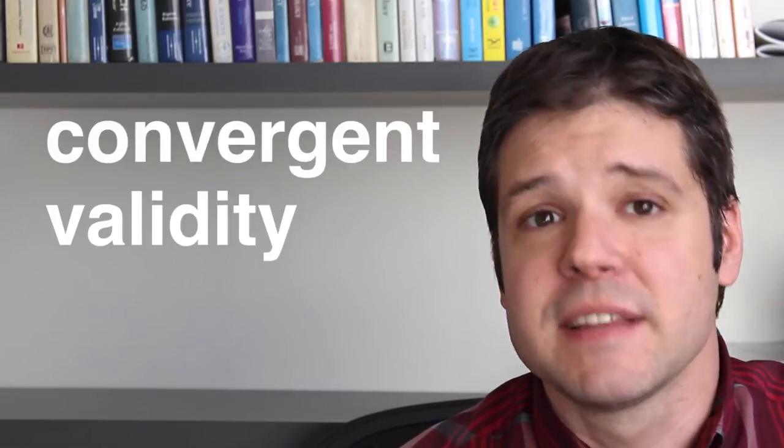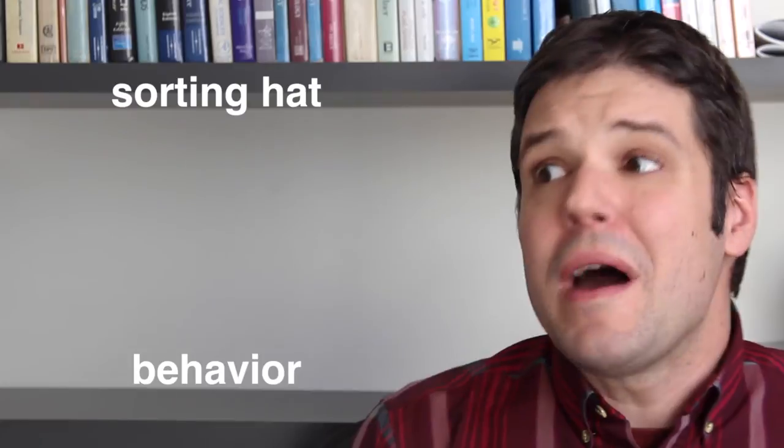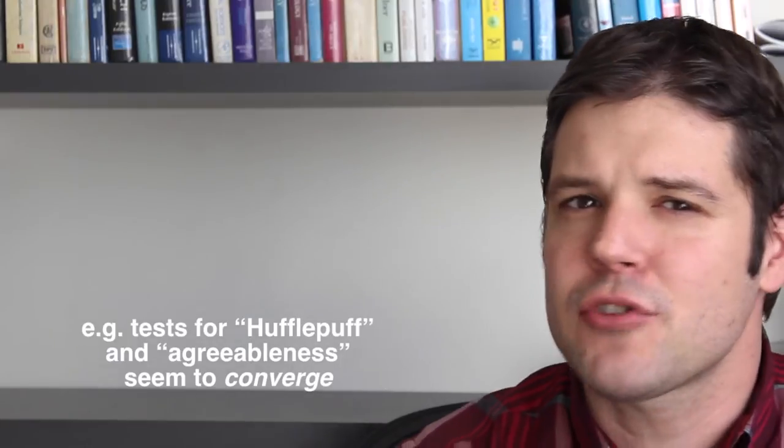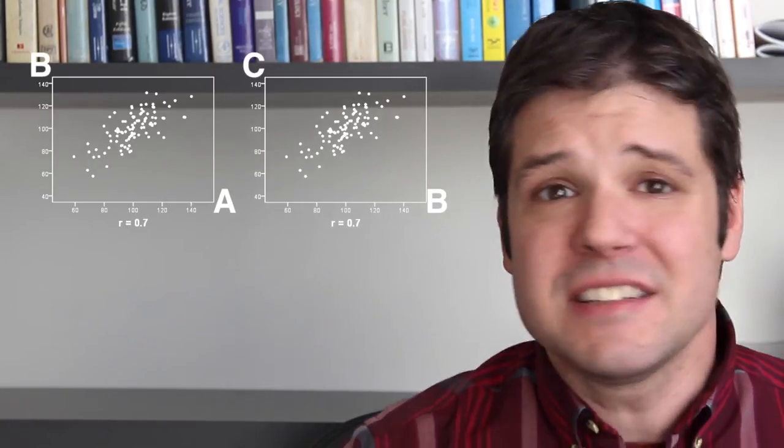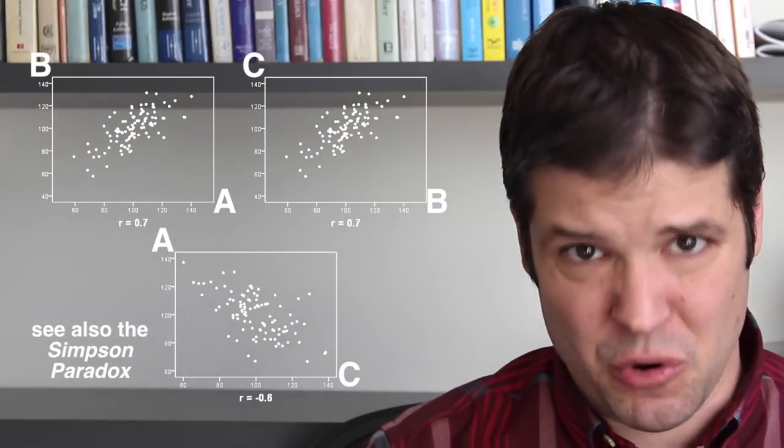Now, there are some limitations to these conclusions. First of all, this only demonstrates what's called the convergent validity of the sorting hat. This means they didn't check whether the sorting hat can predict behavior, they only checked whether it predicts other measures that have been shown to predict behavior. This is less effective because correlations aren't transitive. Just because A correlates with B and B correlates with C doesn't mean that C will correlate with A. A could even negatively correlate with C.